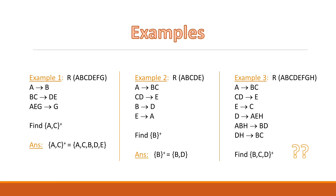Next is example 3. We are given a relation r with attribute set {a, b, c, d, e, f, g, h} and a set of functional dependencies, and we have to find the closure set of {b, c, d}. I am not going to solve this one — you solve it by yourself and please let me know the solution in the comment section.